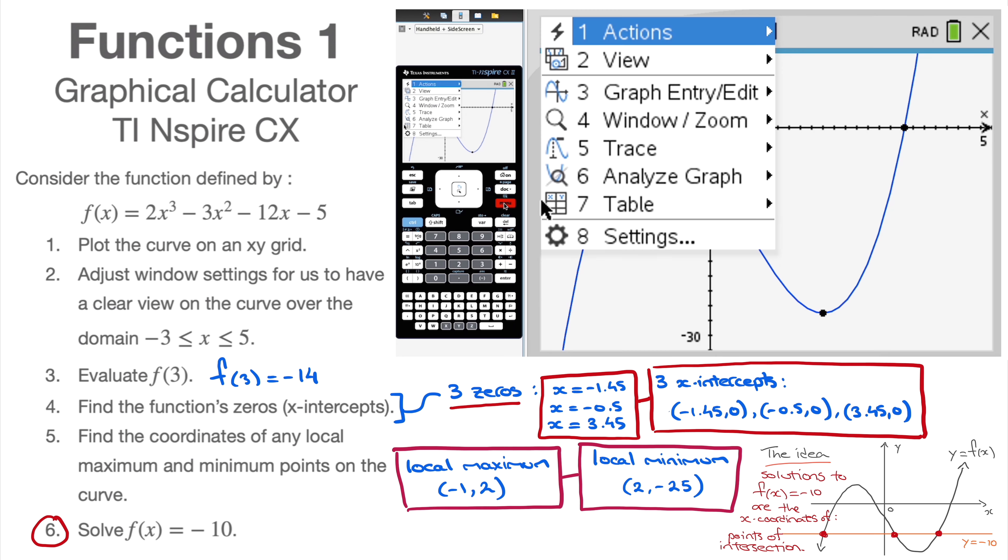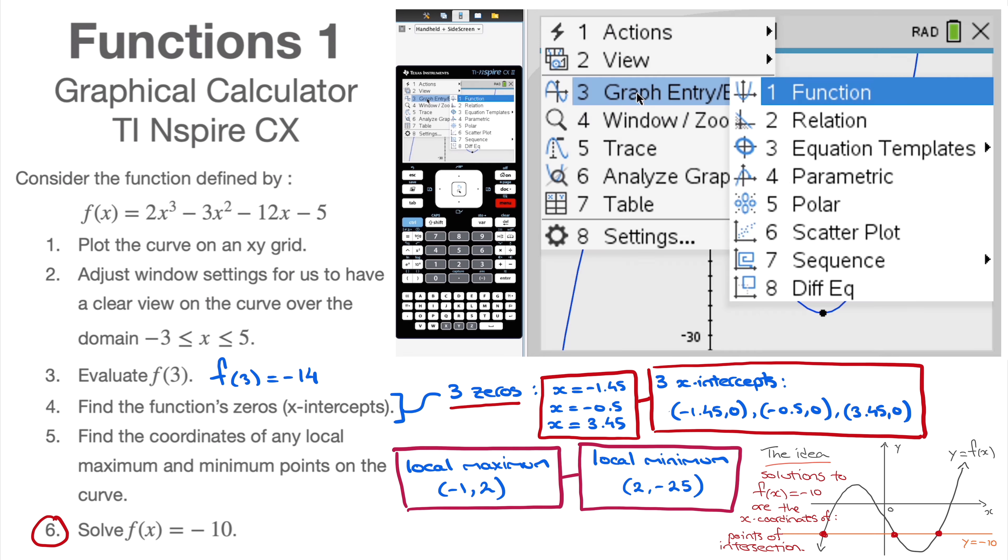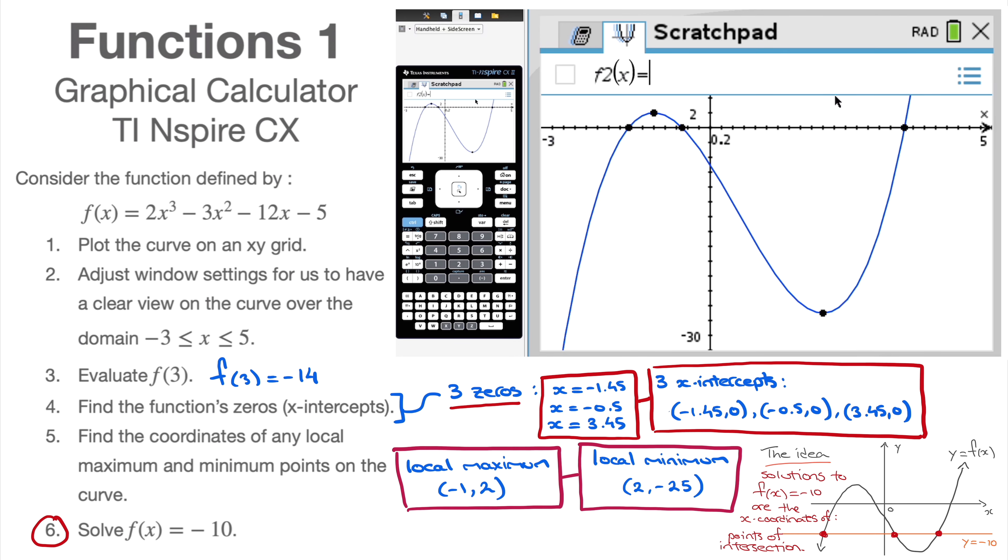That's a horizontal line. That's the line y = -10. And the solutions to f(x) = -10 will be the x coordinates of any points of intersection between this line and that curve.